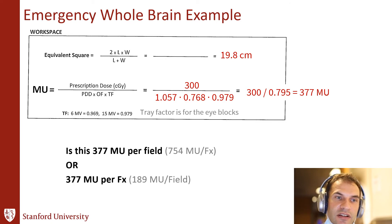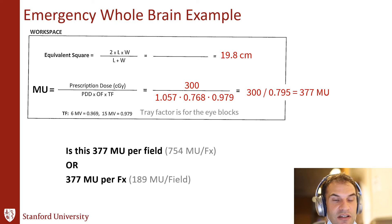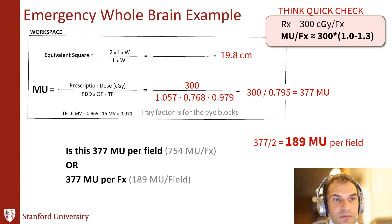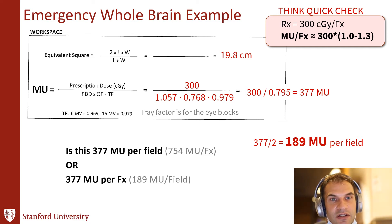Quick question: is this 377 MUs per field or per fraction? The answer is 189 MUs per field — we divide by two because we're delivering the dose from two fields on both sides. A quick way to check: the prescription dose per fraction and MUs per fraction should be similar for 3D plans. So 754 MUs total would be way too high for a 300 centigray treatment — that would be a medical event, about double the dose. Divide by the number of fields.